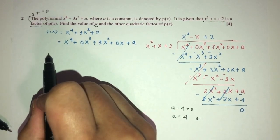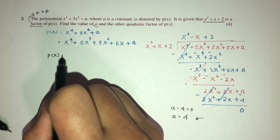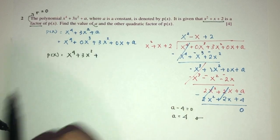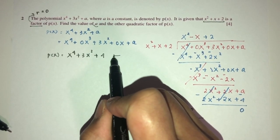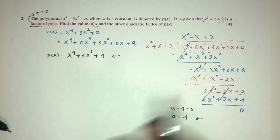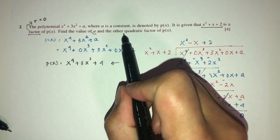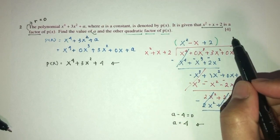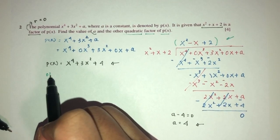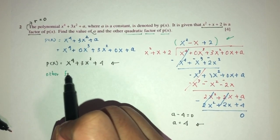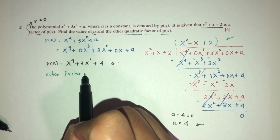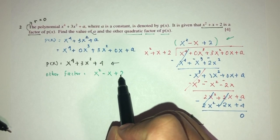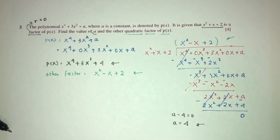Now, p of x is equal to x power 4 plus 3x square plus 4 for p of x. Now, find the other quadratic factor of p of x. The other one will be this one on top remaining. The other factor will be x square minus x plus 2. This is your answer for question number 2.